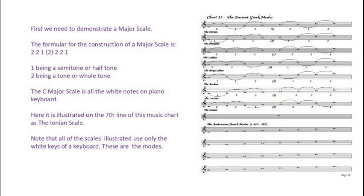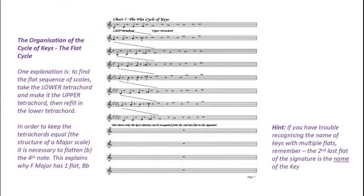Note also that all the scales on this page are modal scales. To find the flat sequence of scales, take the lower tetrachord and make it the upper tetrachord, then refill in the lower tetrachord. Now in order to keep the tetrachord equal, the structure of a major scale,